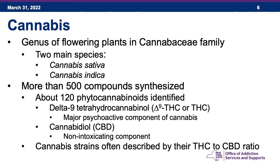Cannabis comes from the genus of the flowering plants in the cannabisae family, and there are two main species: cannabis sativa and cannabis indica. The cannabis plant synthesizes more than 500 compounds, and about 120 phytocannabinoids or plant cannabinoids have been identified. The two we speak about most are delta-9-tetrahydrocannabinol, or THC, which is the major psychoactive compound, and cannabidiol, or CBD, which is a non-intoxicating component of the plant.